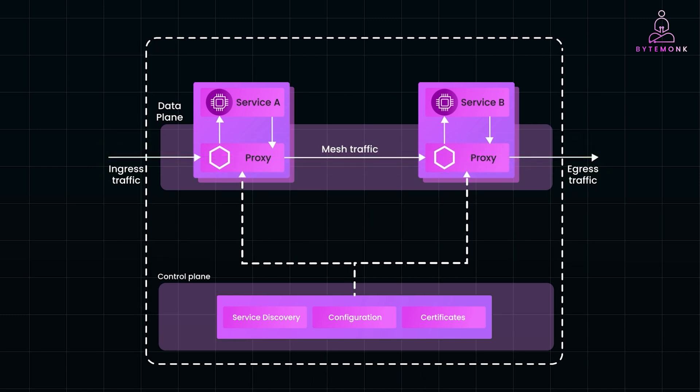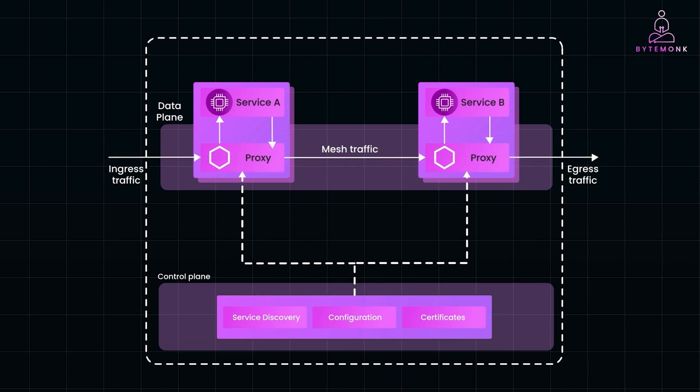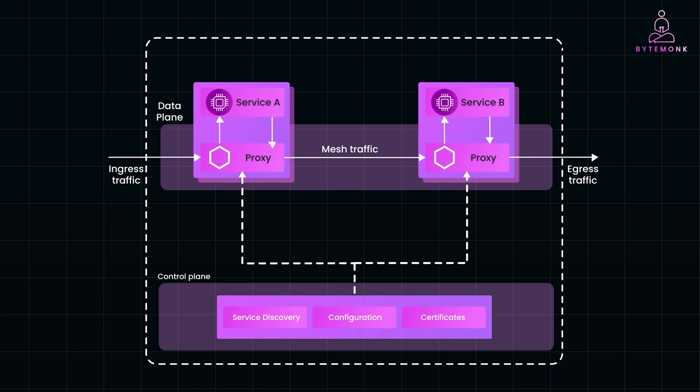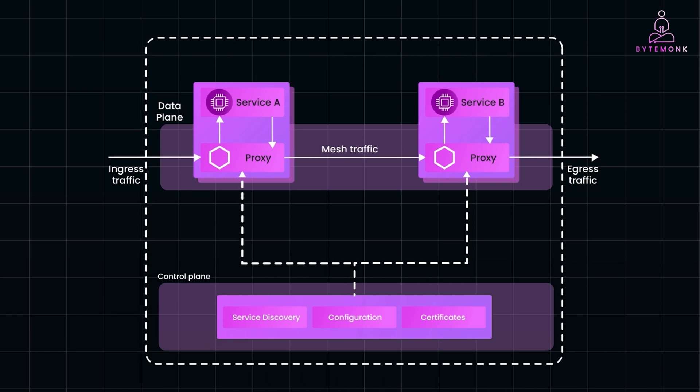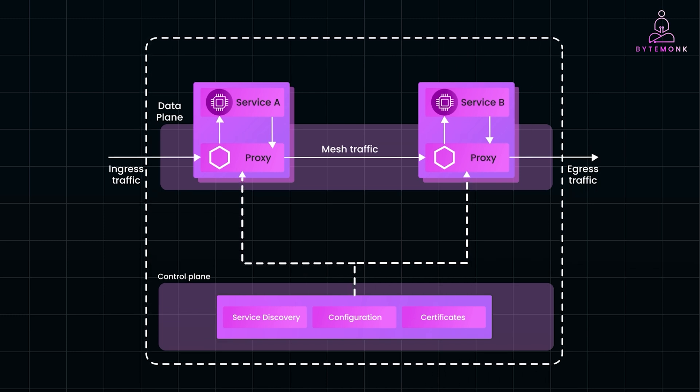In fact, with Istio, Netflix can deploy a new version of microservices without affecting its users, even during high-traffic periods like the launch of a new TV series.